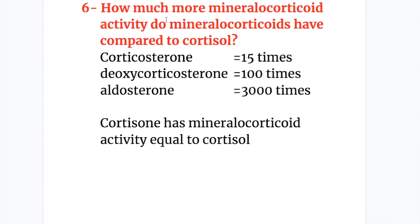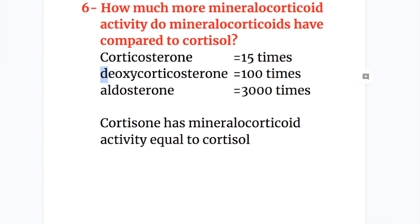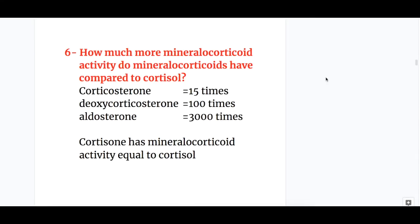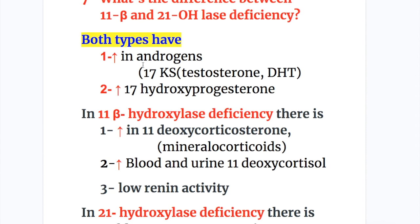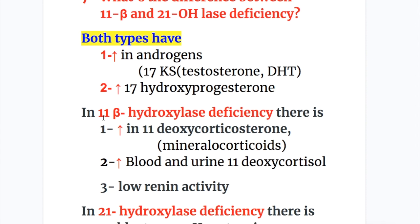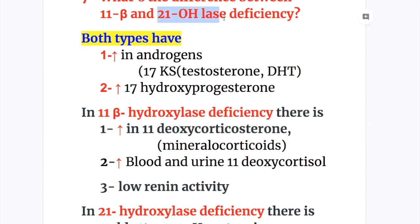Q6: How much more mineralocorticoid activity do mineralocorticoids have compared to cortisol? If cortisol potency is 1, then corticosterone has 15 times more mineralocorticoid activity, deoxycorticosterone has 100 times more, and aldosterone has 3000 times more activity than cortisol. Q7: The difference between 11 beta and 21 hydroxylase deficiency — 11 beta hydroxylase deficiency causes increased 11-deoxycorticosterone and hypertension, while 21 hydroxylase deficiency causes hyponatremia and hyperkalemia.